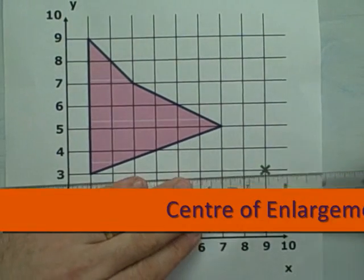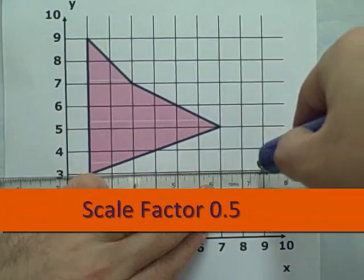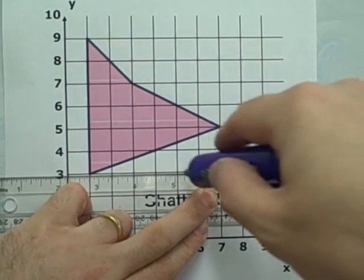For our next enlargement, we will use a scale factor of half, so the shape will end up smaller. We count 1, 2, 3, 4, 5, 6, 7, 8 and half that to 4.